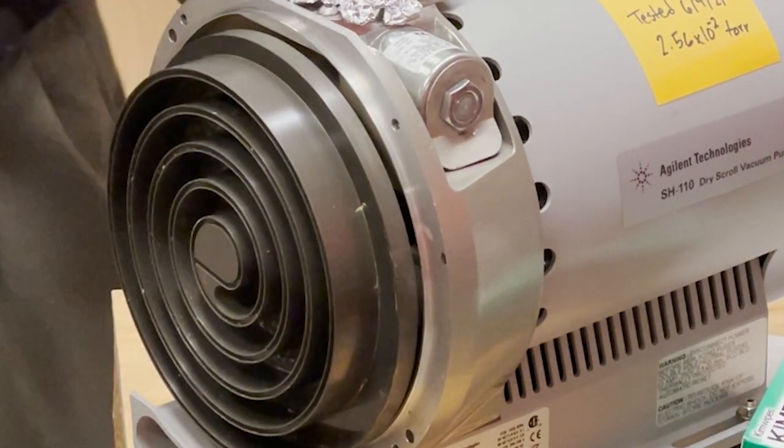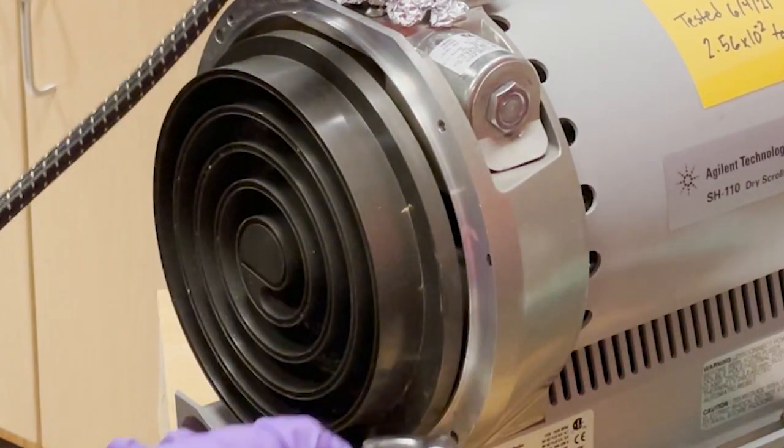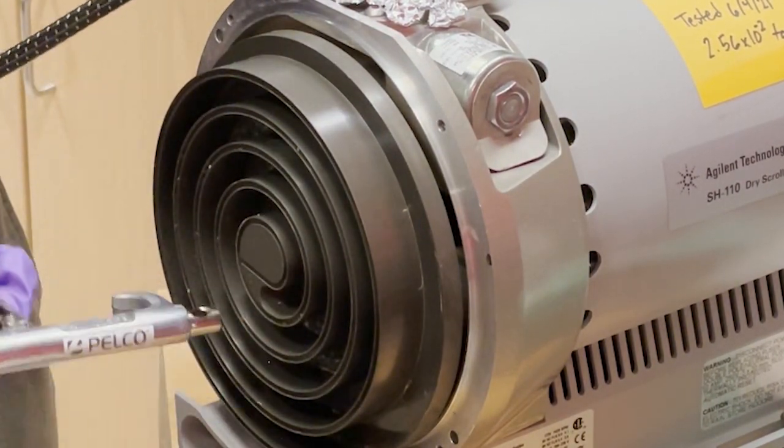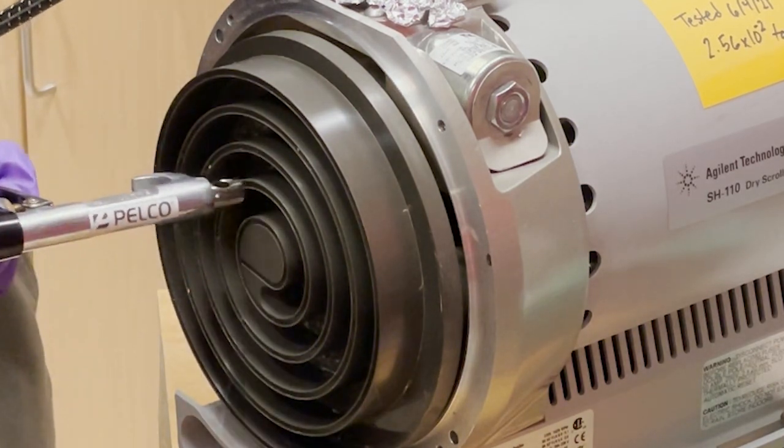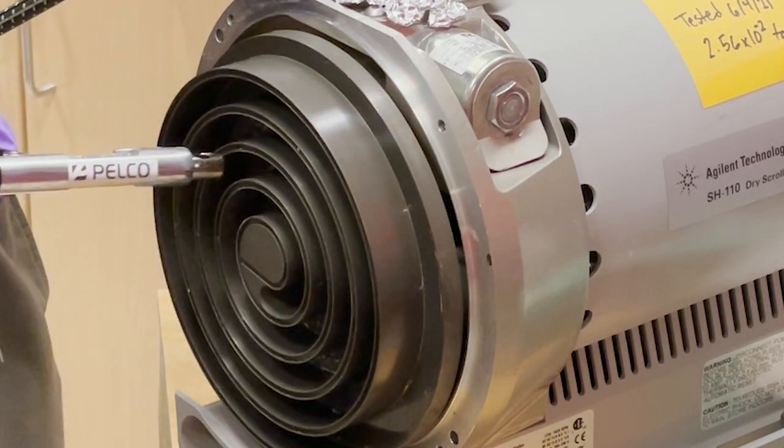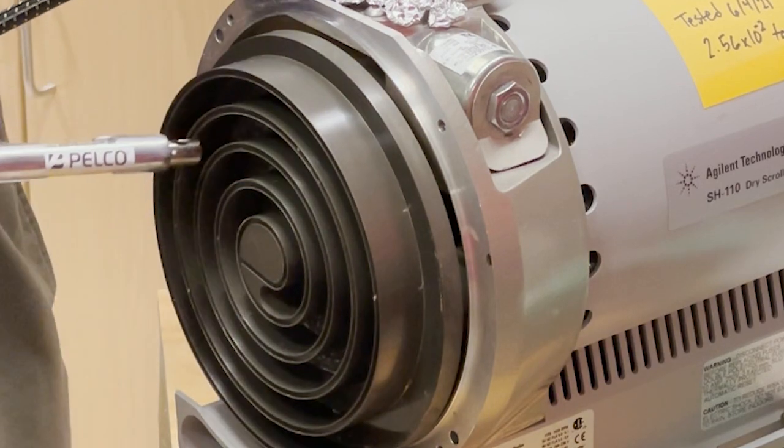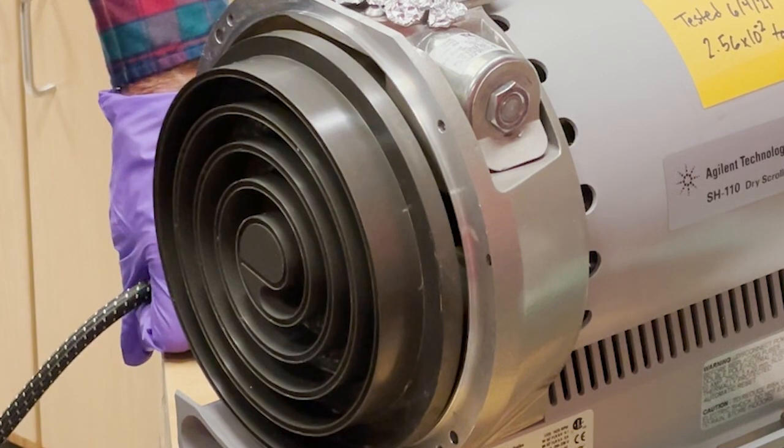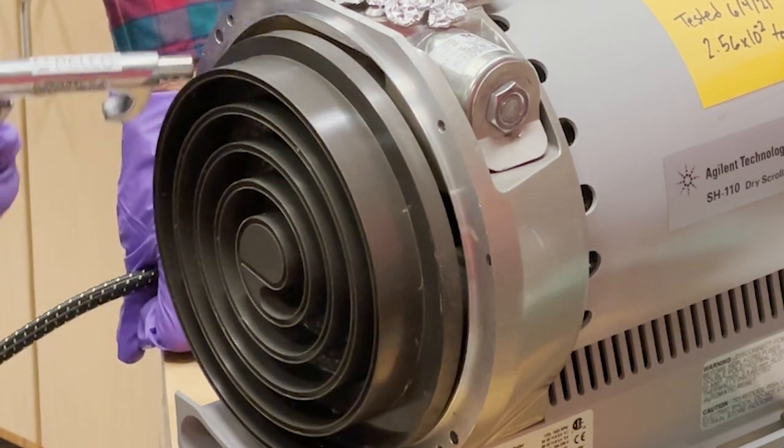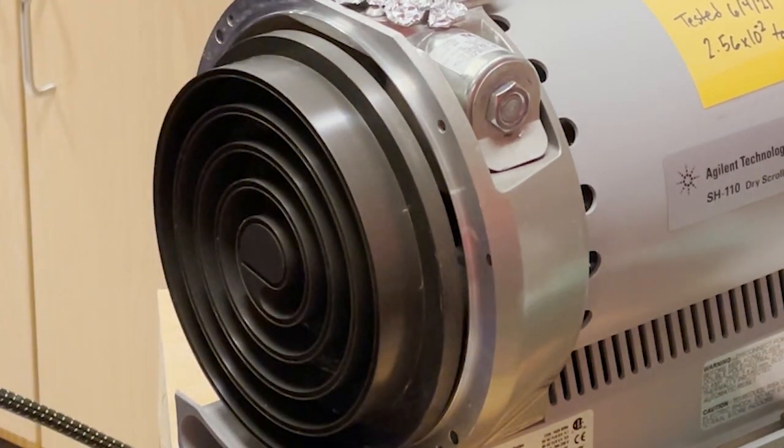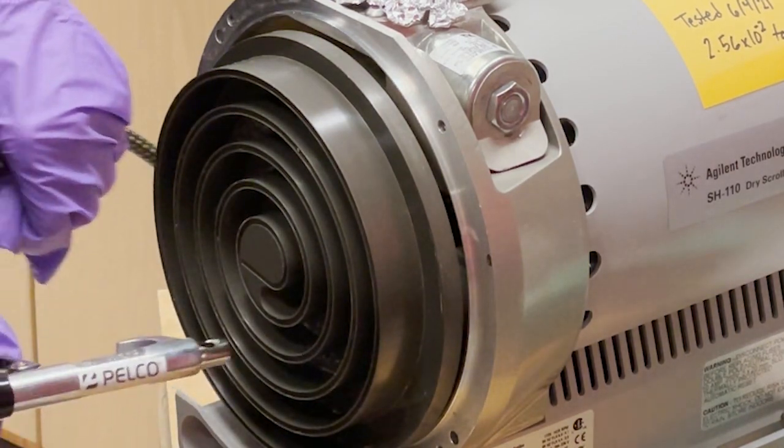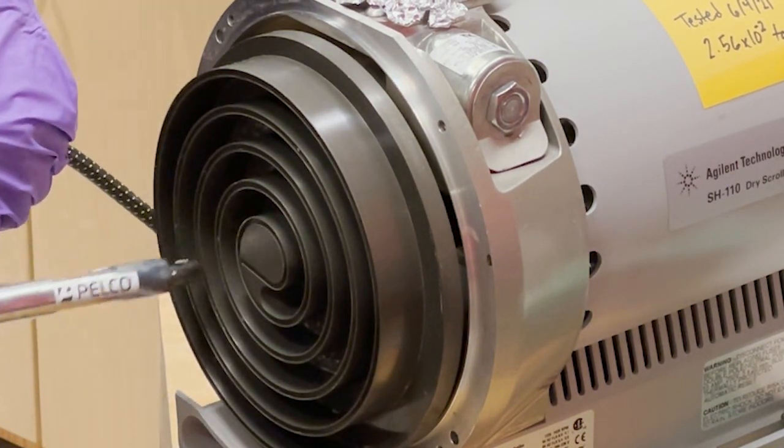So we're blowing it off with nitrogen here and you can see all this dust. The dust is actually little bits of Teflon. And especially this part because some of the dust is down inside. You can see that being blown out now. And we're using nitrogen from a nitrogen cylinder.